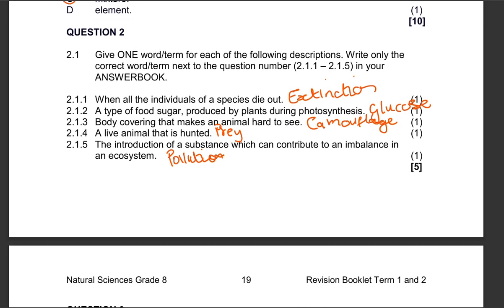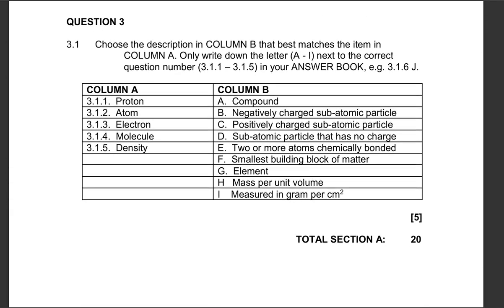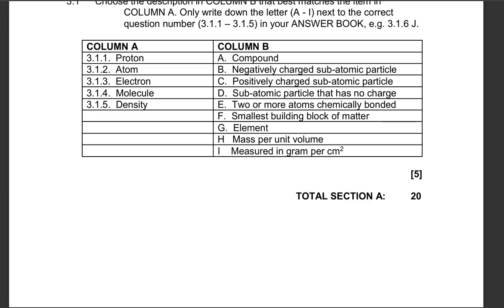We then move to matching column A and column B — remember to pause the video. A proton matches C: positively charged subatomic particle. An atom matches F: the smallest building block of matter. An electron matches B: negatively charged subatomic particle. A molecule matches E: two or more atoms chemically bonded. Density matches H: mass per unit volume.